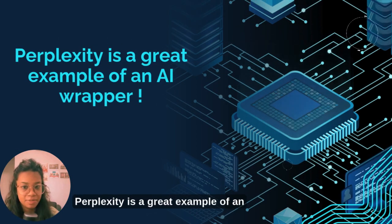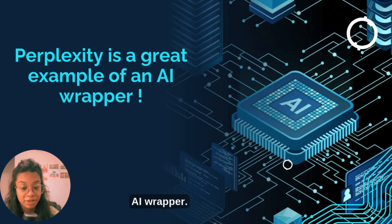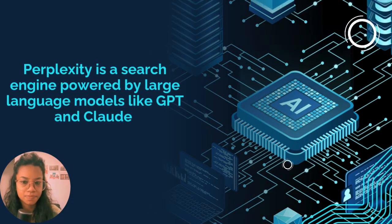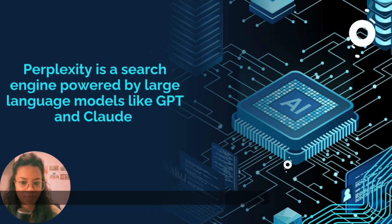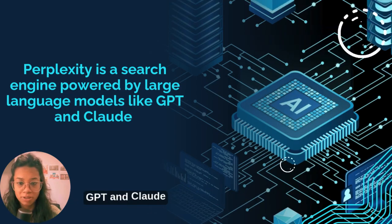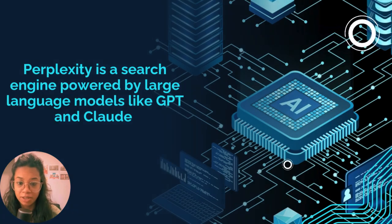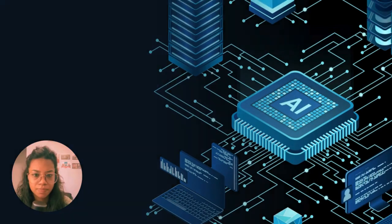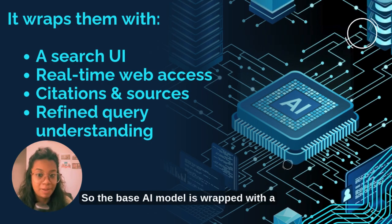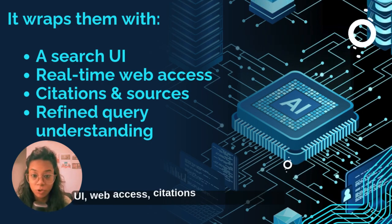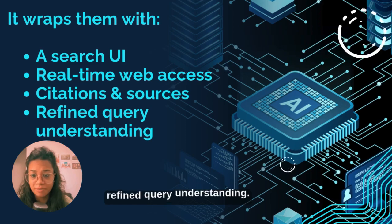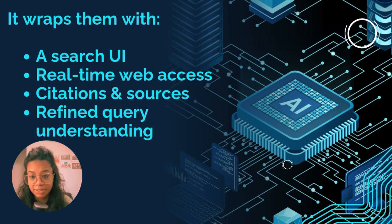Perplexity is a great example of an AI wrapper. It is a search engine powered by large language models like GPT and Claude. The base AI model is wrapped with a UI, web access, citations and resources, and refined query understanding.